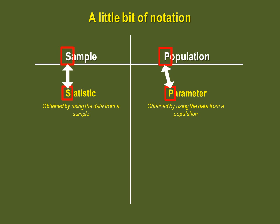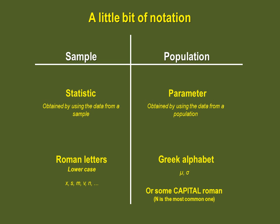If this is any help, notice how the first letters match up. When we write down our statistics, we will use letters in lowercase from the Roman alphabet. But when we write down parameters, we will mostly use Greek letters, although there are a few exceptions where we will use capitalized Roman letters.